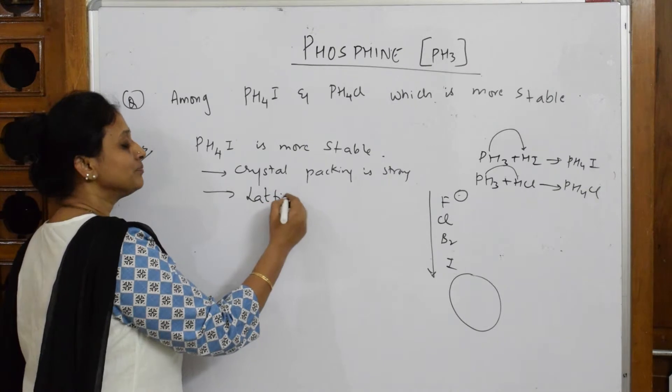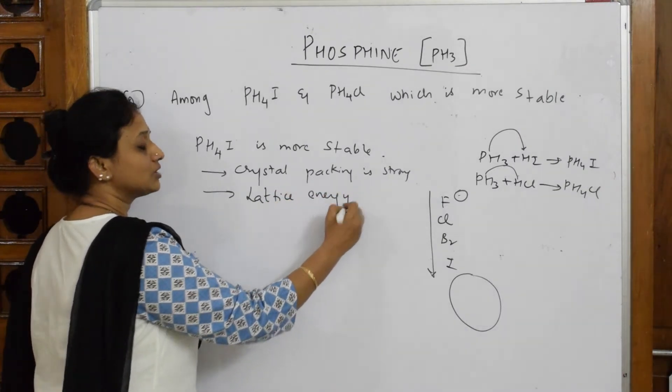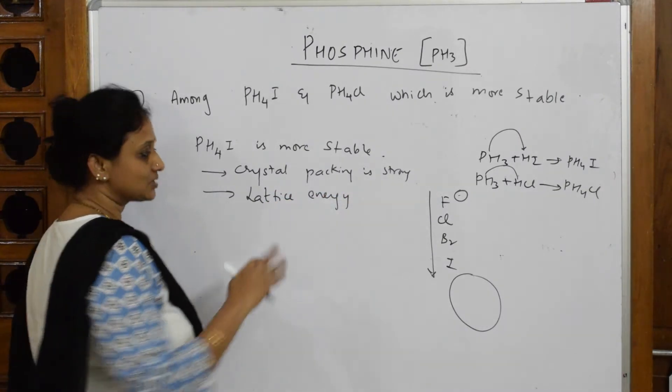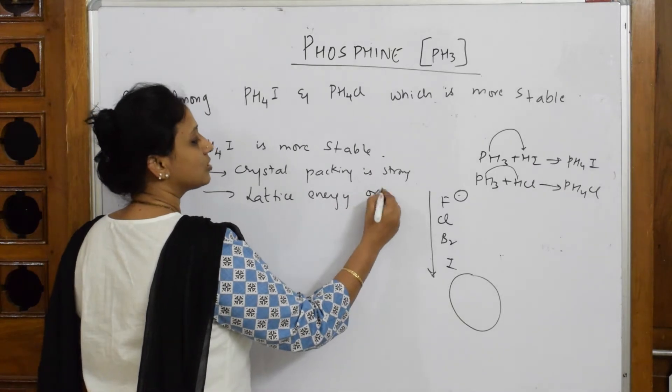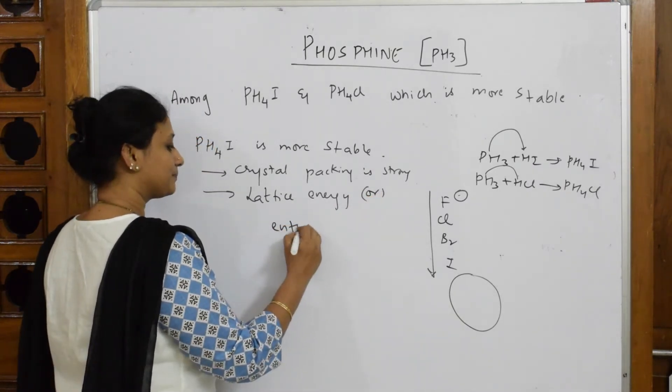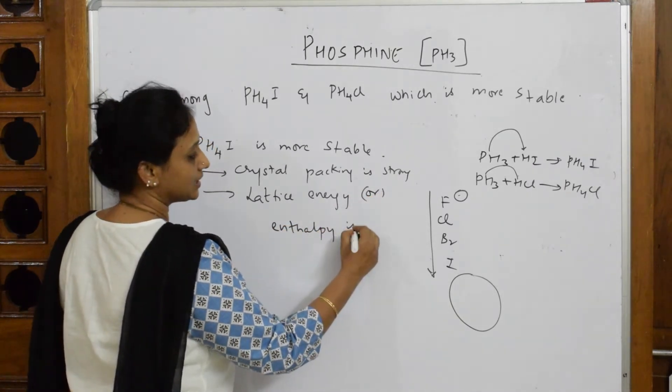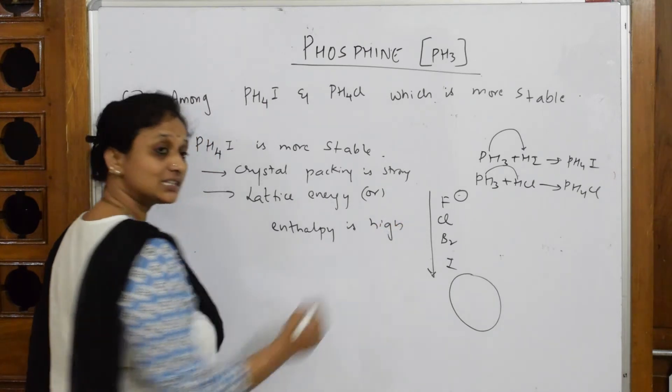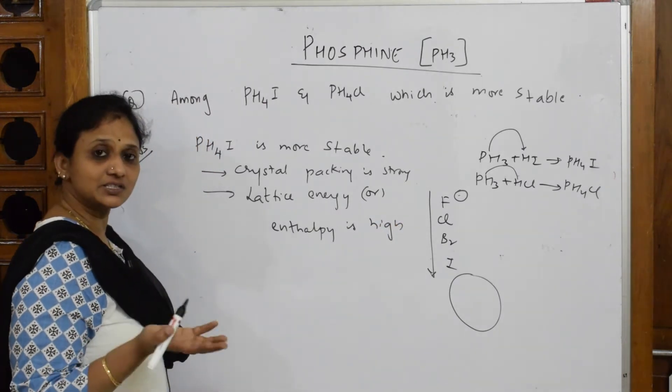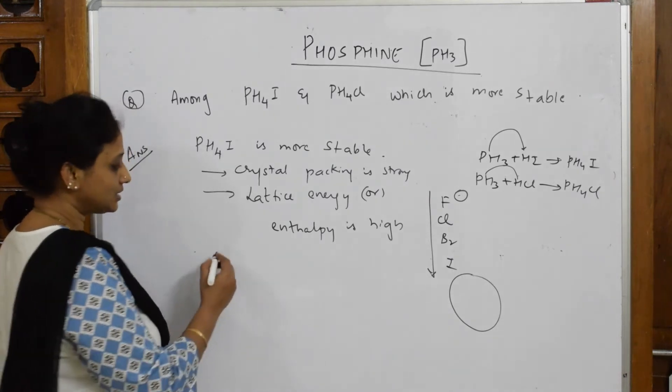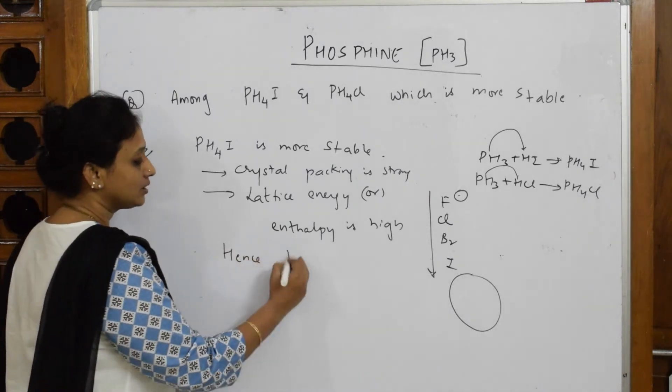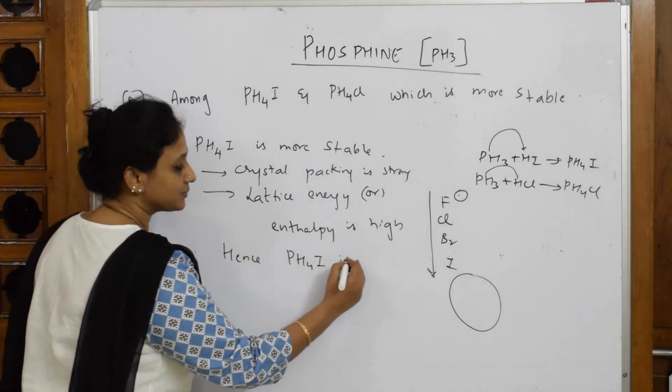Lattice enthalpy is the energy required to break the crystal lattice. When lattice enthalpy is high, automatically the system or the PH₄I is strong enough or stable. Hence PH₄I is stable.